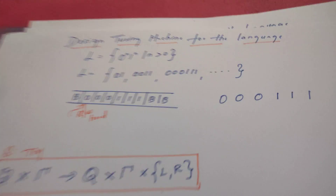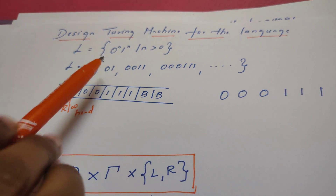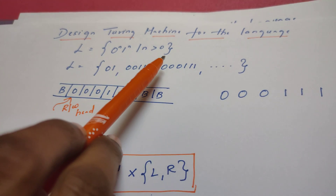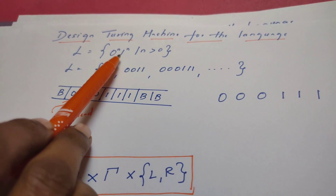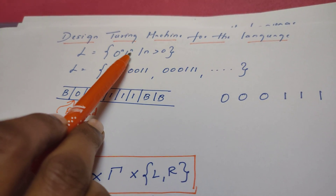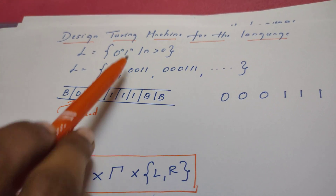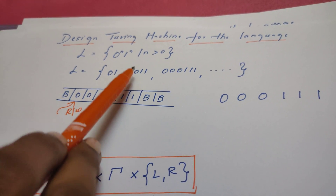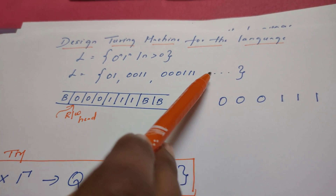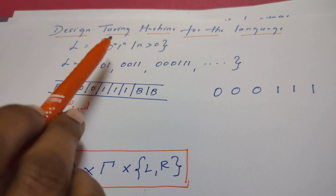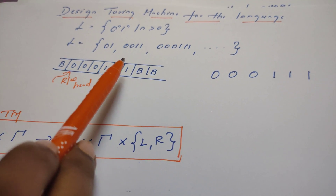In this video we design a Turing machine for the language L = 0^n 1^n such that n is greater than 0. To understand the pattern: if n=1 it is '01', if n=2 it is '0011', if n=3 it is '000111', and so on. These are the strings that belong to the language, and our aim is to design a Turing machine which recognizes them.